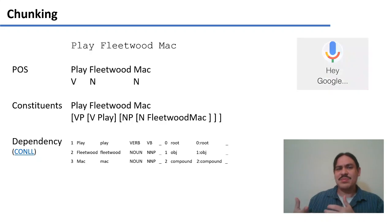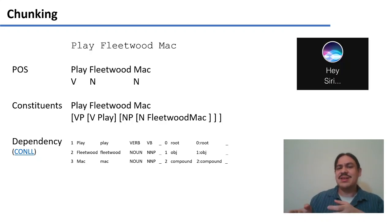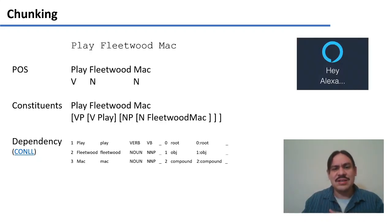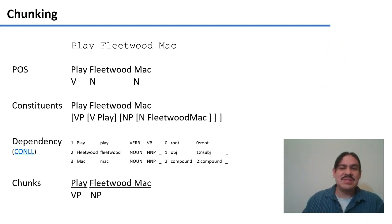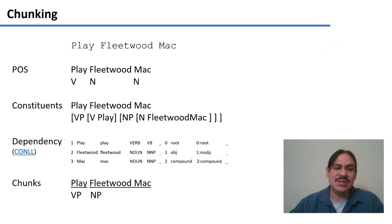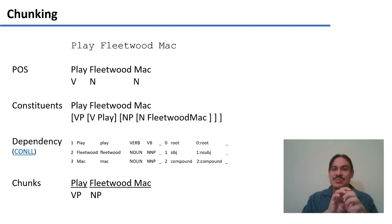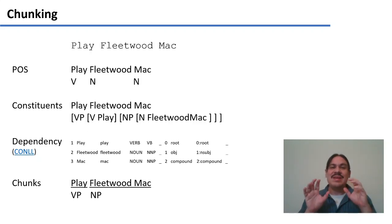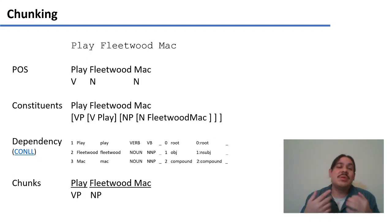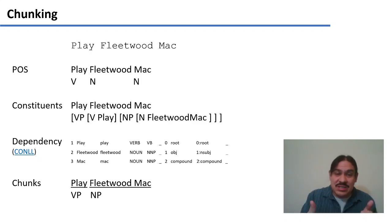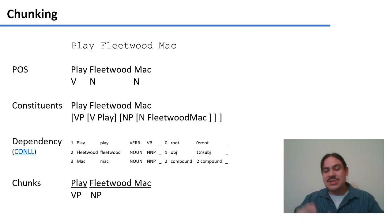Both types of parsing — constituency and dependency — do a lot of things and go into a lot of detail about the sentence. But sometimes we don't need that much detail. Sometimes we just need the computer to get the action, play, and then what we want the action performed on — Fleetwood Mac, the noun phrase. These larger pieces are called chunks, and we're going to perform an operation called chunking, which doesn't go into as much detail as constituency or dependency parsing. It just wants the larger parts of the sentence.